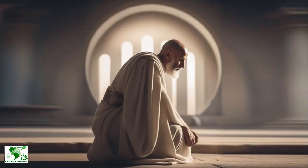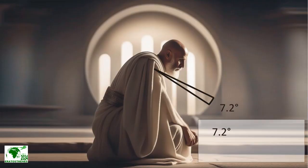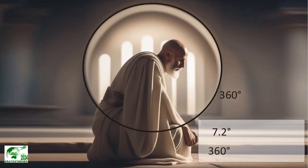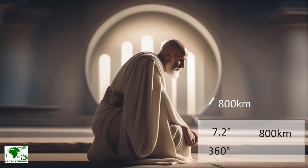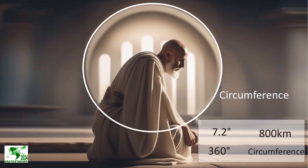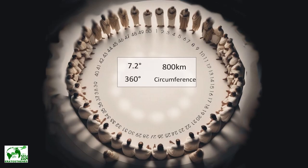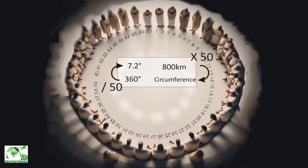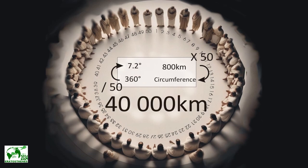The proportion of this angle of 7.2 degrees in relation to the 360 degrees of a circle is the same as the proportion of the distance of 800 kilometers separating the two cities relative to the circumference of the earth. So: 360 divided by 7.2 gives 50, and 800 kilometers multiplied by 50 gives 40,000 kilometers.